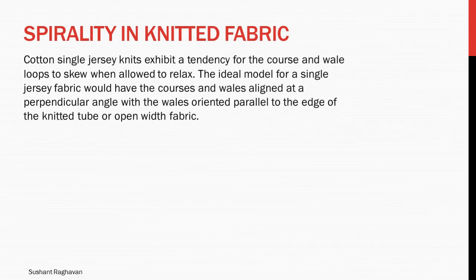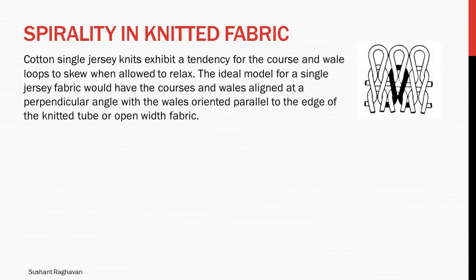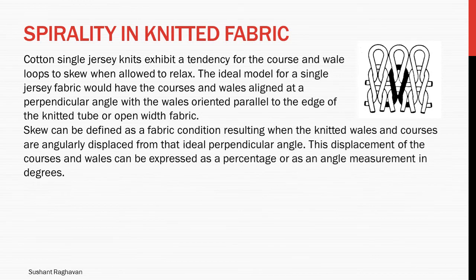Cotton single jersey knits exhibit a tendency for the courses and wale loops to skew when allowed to relax. The ideal model for a single jersey fabric would have the courses and wales aligned at a perpendicular angle, with the wales oriented parallel to the edge of the knitted tube or open width fabric. Skew can be defined as a fabric condition resulting when the knitted wales and courses are angularly displaced from that ideal perpendicular angle. This displacement can be expressed as a percentage or as an angle measurement in degrees.